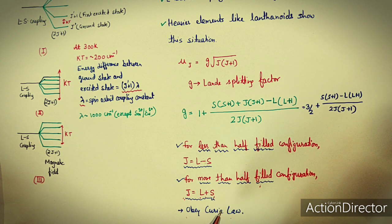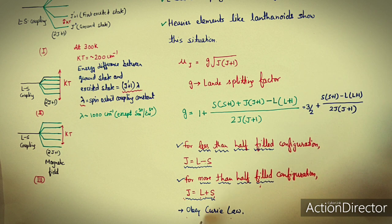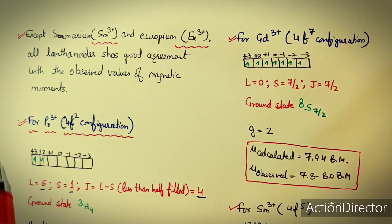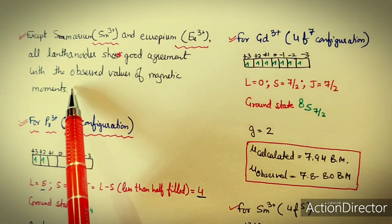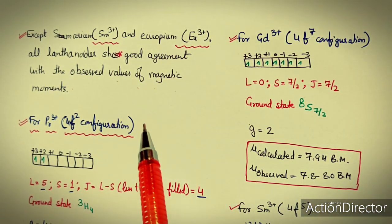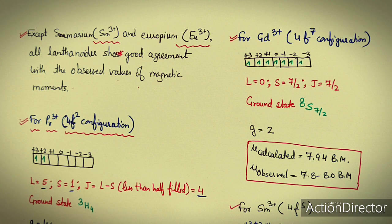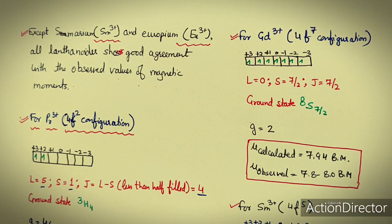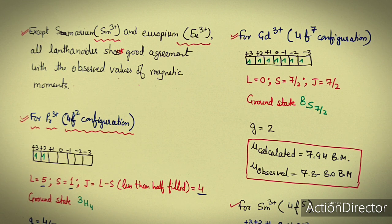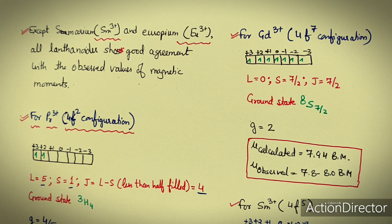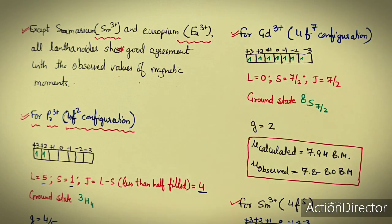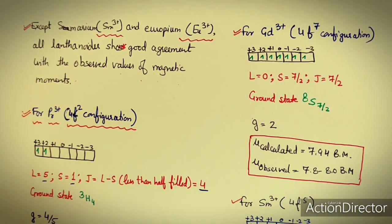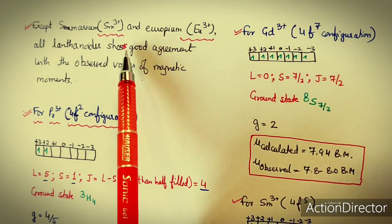Except for samarium and europium ions, all lanthanoids show good agreement with observed magnetic moment values. For promethium with configuration 4f², the arrangement gives L = 5, S = 1, J = L − S = 4. The ground state term is ³H₄. The G value calculates to 4/5, giving a calculated magnetic moment of 3.58 BM, while the observed value ranges from 3.4 to 3.6 BM - in good agreement.